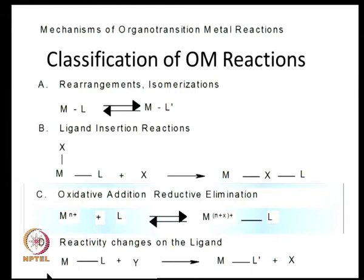The increase in the formal oxidation number of the metal results in the 'oxidative' part of the name. This reaction can be reversible, so you can have both oxidative addition and reductive elimination in the catalytic cycle. The thermodynamics of this process is extremely important. It is feasible in transition metal chemistry, but not in main group chemistry where only oxidative addition happens.